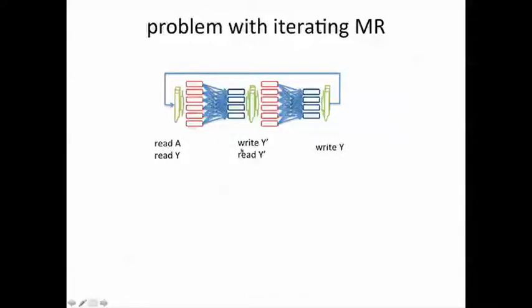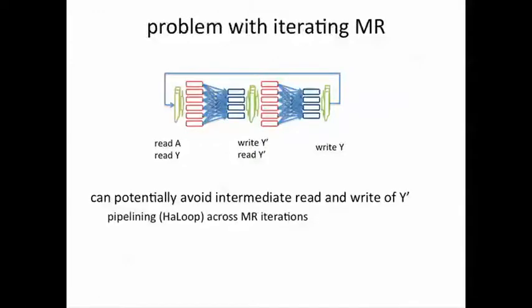You're writing y prime and reading y prime again, which you can potentially avoid by pipelining using techniques like HALOOP and other implementations where you can pipeline the writes and the reads from the writes of one reducer to the reads of the next mapper in the next phase.